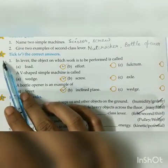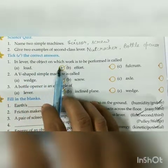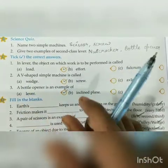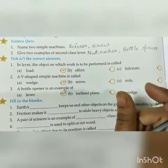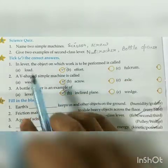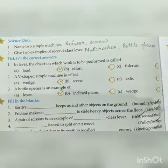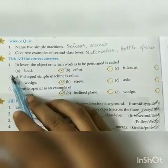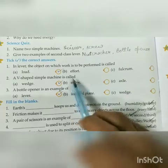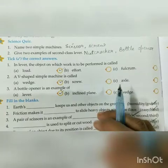Next, question number C — tick the correct answers. First: in a lever, the object on which work is to be performed is called load. In a lever, there are three terms: load, effort, and fulcrum. The object on which work is done is load — answer is option number A. Effort is the force we apply, and fulcrum is the point where the lever turns. Second: a V-shaped simple machine is called a wedge — answer is option number A.